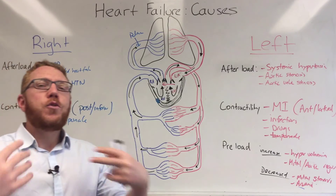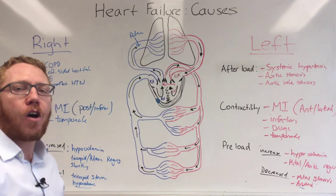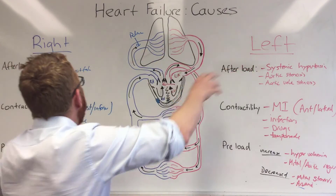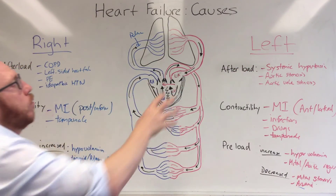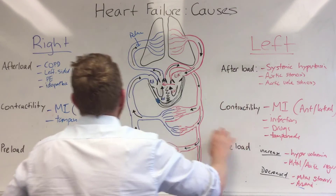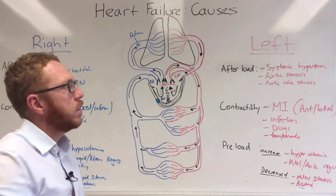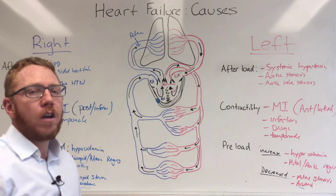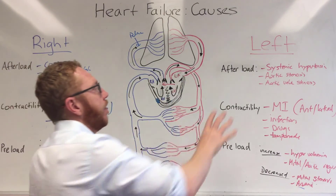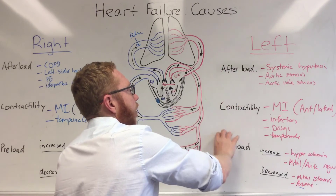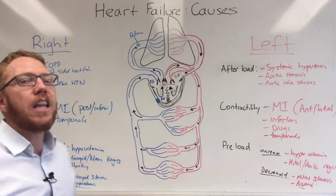So hopefully you've now seen the common causes of heart failure in both left-sided and right-sided contexts. We've broken them into these categories — afterload, contractility, and preload — so you can logically see how the most common causes of heart failure fit into these three categories and whether they manifest on the left or right side.